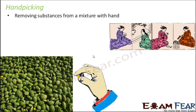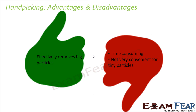Hand picking works wonderfully when the number of substances to be removed is very small — you just cannot do this for hours and days on end. The advantage of hand picking is that it effectively removes big particles; once removed, you are completely sure the particle is no longer there.